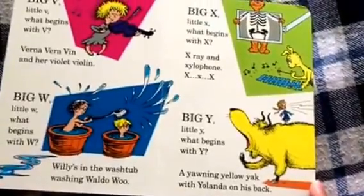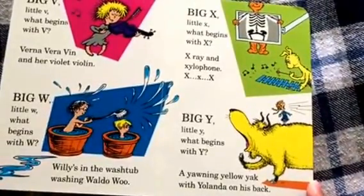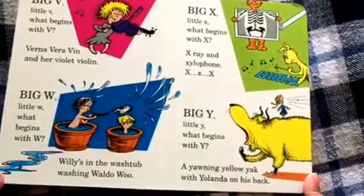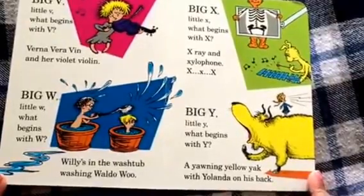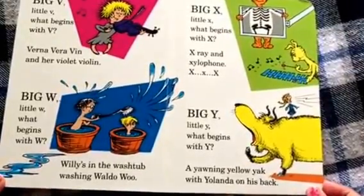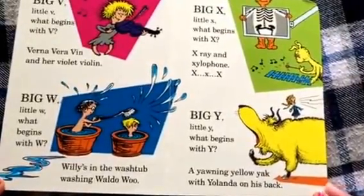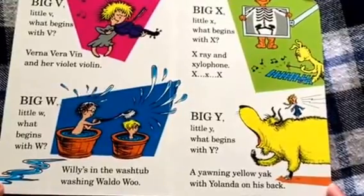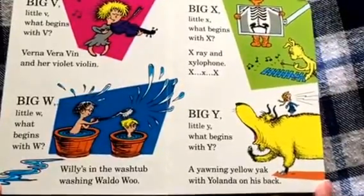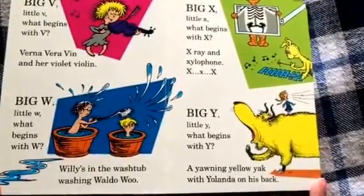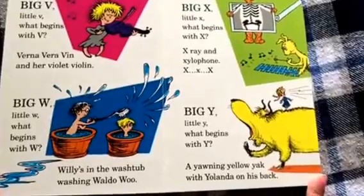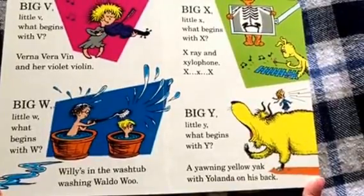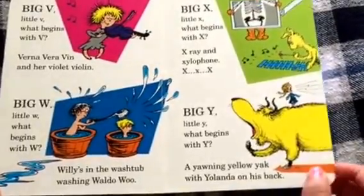Big X, little X, what begins with X? X-ray and xylophone, X, X, X. Big Y, little Y, what begins with Y? A yawning yellow yak with Yolanda on his back.